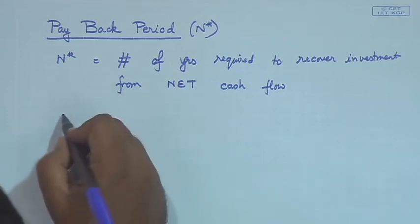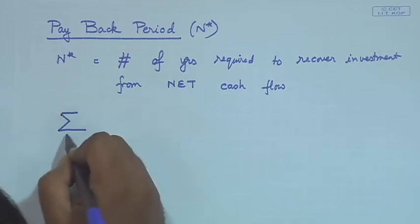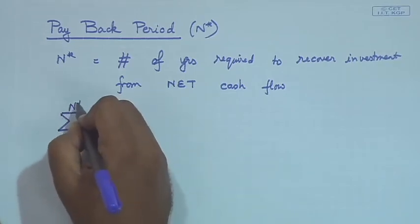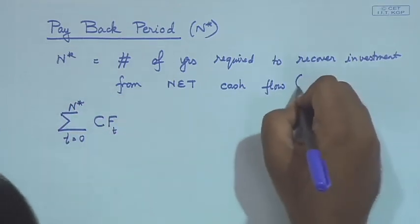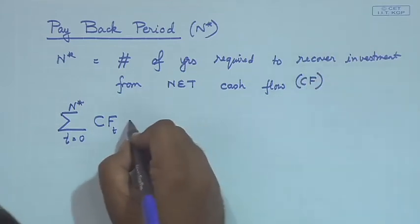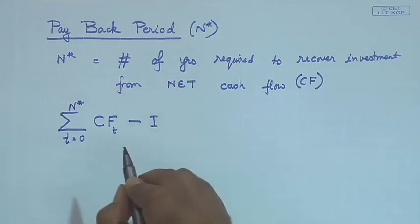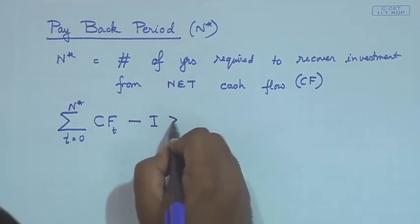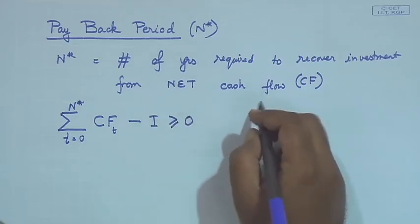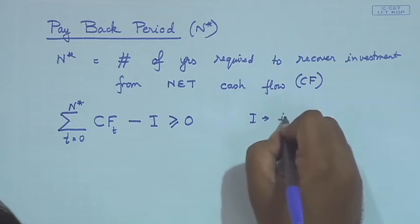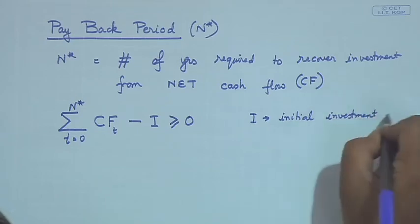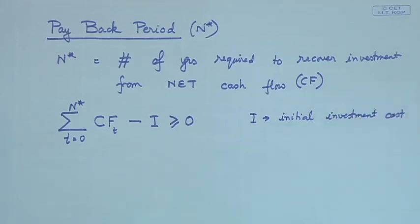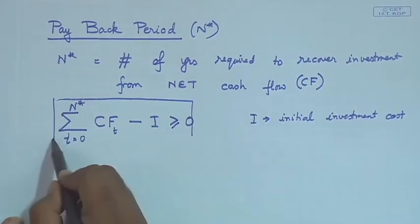Formally, the payback period N* is defined as the smallest N such that the sum from t=0 to N* of Cf(t) minus the initial investment cost I is greater than or equal to zero, where I is the initial investment cost.